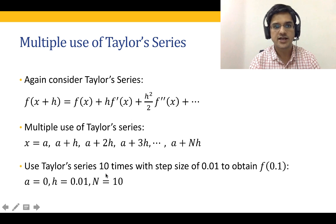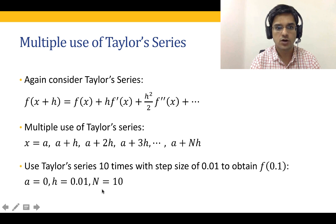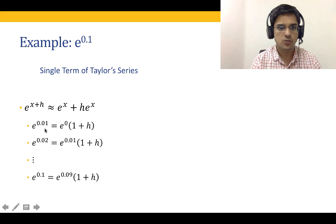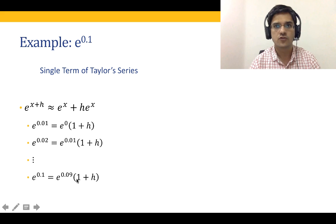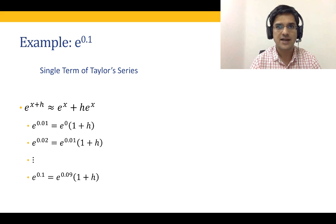For example, if we were to use the Taylor series expansion 10 times starting with a equal to 0 and h equal to 0.01, we get the following. e to the power 0.01 is going to be 1 multiplied by 1 plus h, because using the Taylor series expansion, e to the power x plus h equals f of x plus h multiplied by f prime of x. Therefore, e to the power 0.02 is e to the power 0.01 multiplied by 1 plus h, e to the power 0.03 is e to the power 0.02 multiplied by 1 plus h, and so on. At each step, the new expval is the previous expval multiplied by 1 plus h.